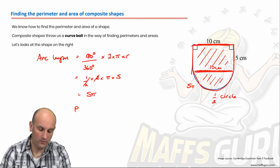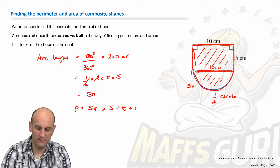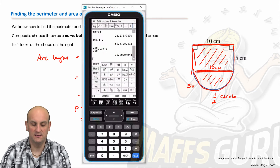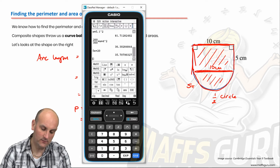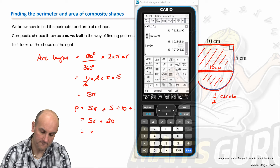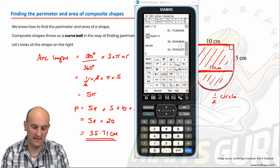So the perimeter equals 5π plus 5 plus 10 plus 5, which gives 5π + 20. Firing up my calculator: 5π + 20 gives a value of 35.71 centimetres — centimetres, not centimetres squared, because it's just a length.